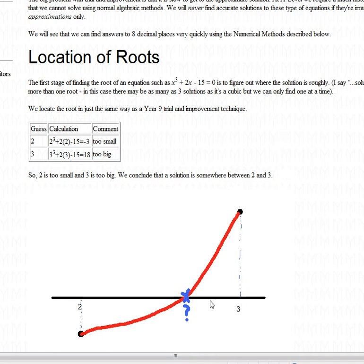Now, trial and improvement works very slowly by sandwiching the root between two values and slowly getting to where it is. We need a faster way at A level and that's what we're going to look at now.